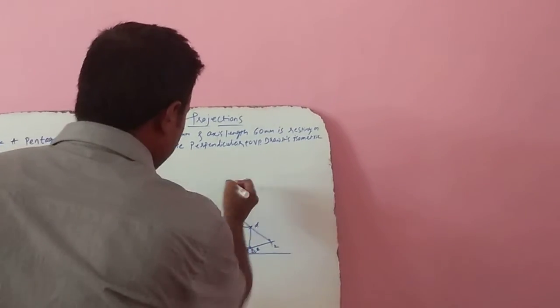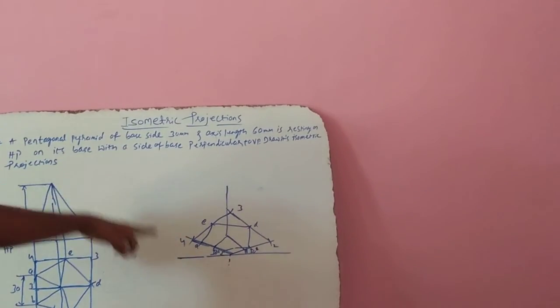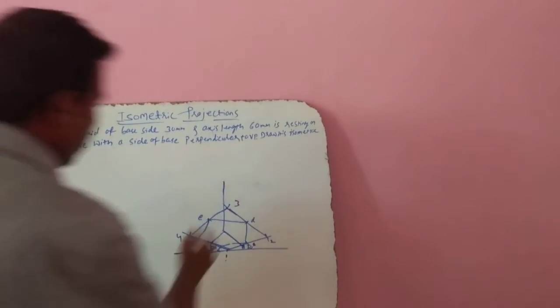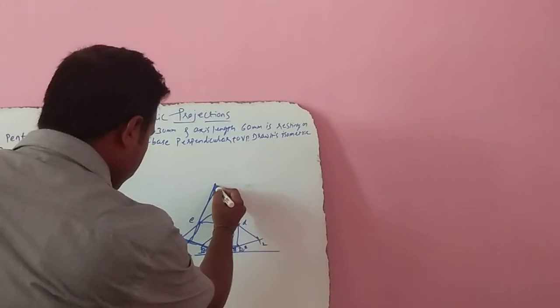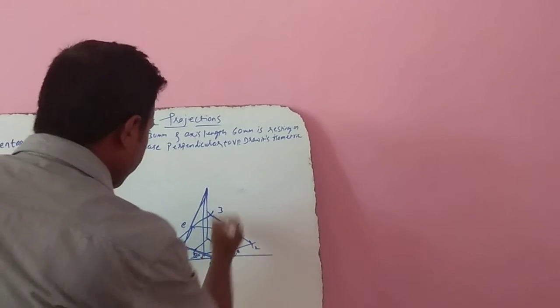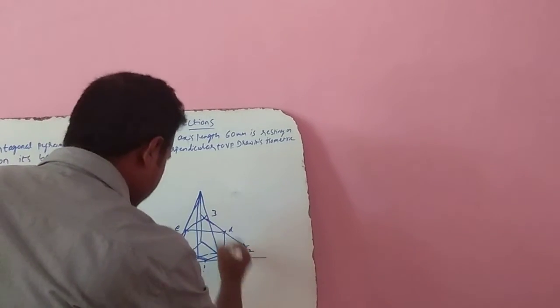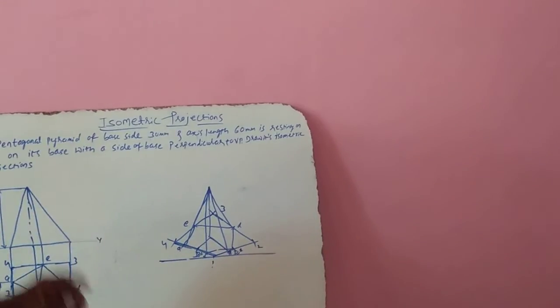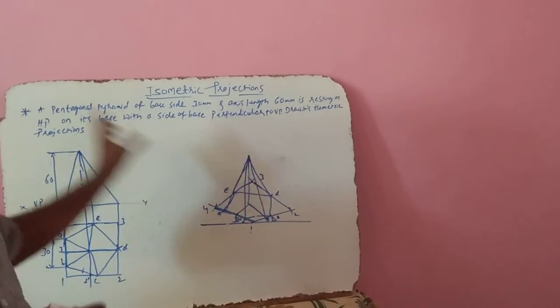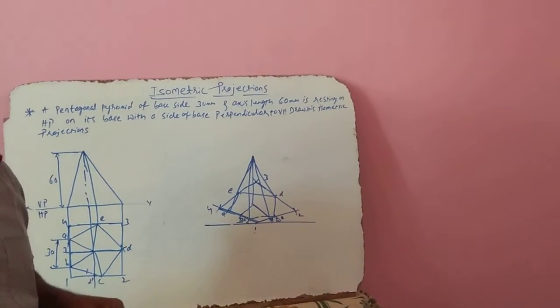From this is the apex of the pyramid. From that apex, you connect to the corresponding point. From this apex to E point, A point, then B point, and similarly C and D point. This is the isometric projection of a pentagonal pyramid. Thank you.